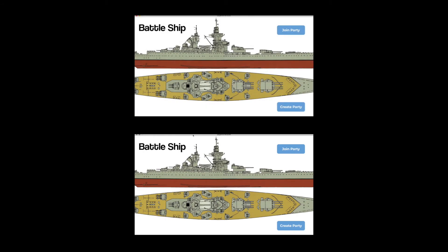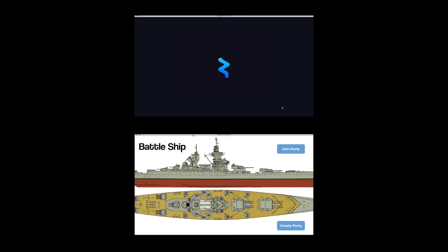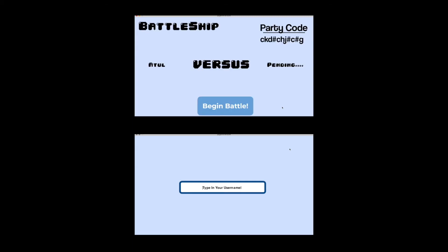With that out of the way and sockets explained, I'd like to show a complete demonstration of the Battleship game in full. The first thing we see is two title screens with Battleship on it and two buttons — Join Party and Create Party. One person is supposed to click Join Party and the other is supposed to click Create Party. The next thing you have to do is type in your username in this UI, and once you do that, it gets you into a screen that shows your username versus pending — where pending is basically the other opponent's username.